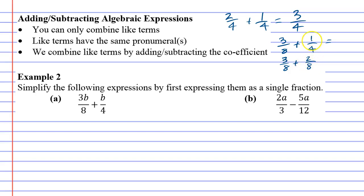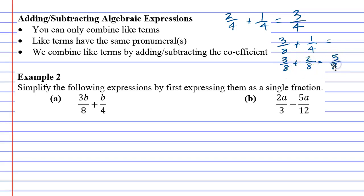The way I did that is I doubled both the numbers. 1 over 4, when doubled, is 2 over 8. You're always allowed to do this with fractions — you can double them, triple them, multiply them by 5 — as long as you do the same to the top and bottom of the fraction. Now when I add them up, I can just go 3 plus 2 is 5, and the 8 stays the same.